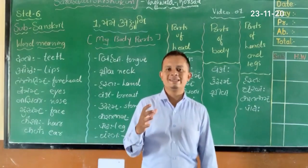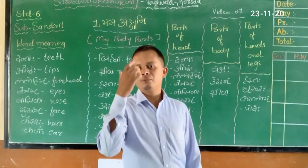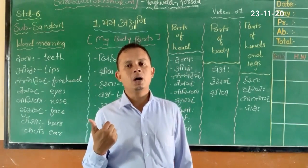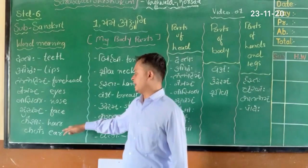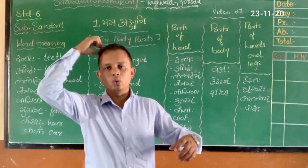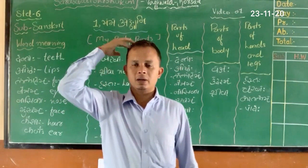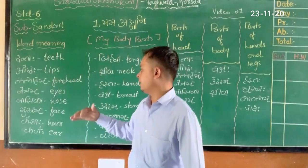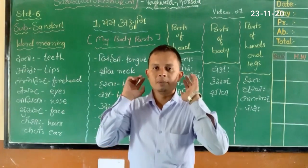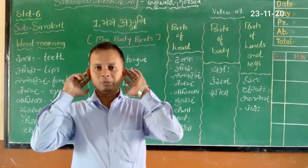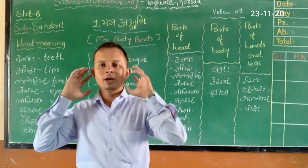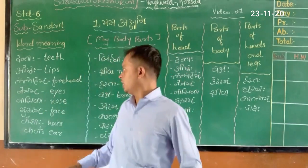Mukham means our face. Kesah means our hair — that is very simple in English. Kana means our ear; the function of Kana is that you can hear properly.